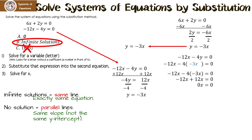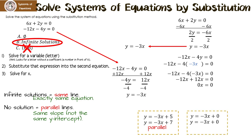Let's review: solving the second equation for y also gives y equals negative 3x — they're the same line, so there are infinite solutions. Parallel lines have the same slope but different y-intercepts and have no solution because they never intersect. If you have the same line, there are infinite solutions.